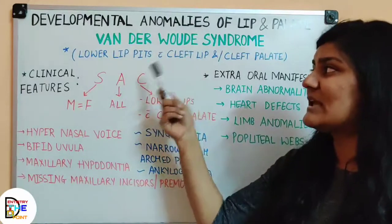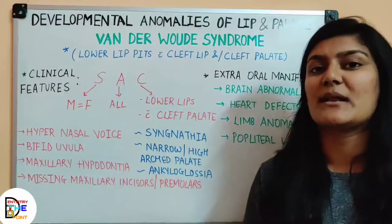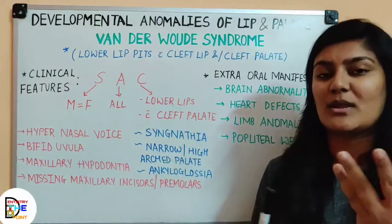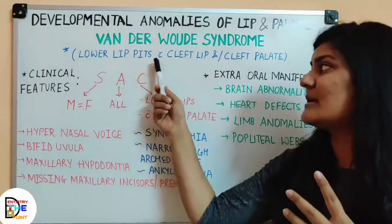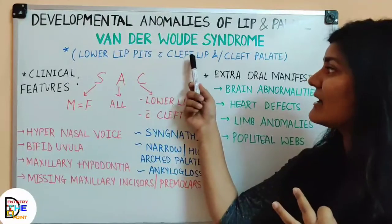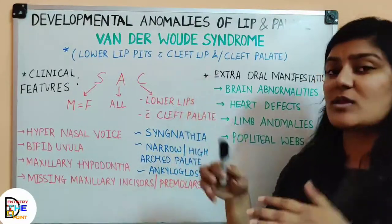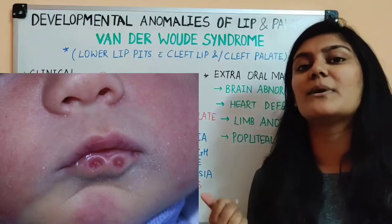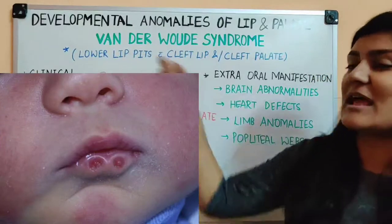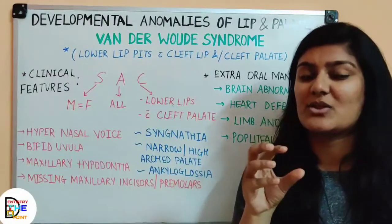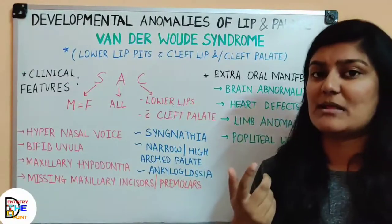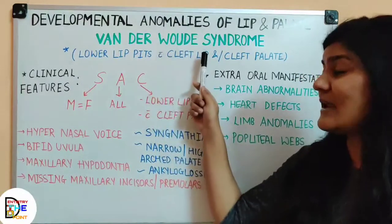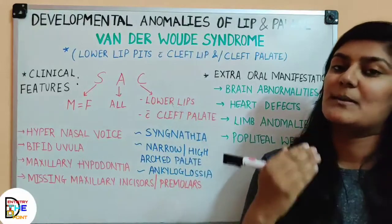Van der Woude syndrome has three other names. The first name is Lip Pits Syndrome. The second name is Cleft Lip Syndrome. The third name is Dimpled Papilla Syndrome — because the pits give a dimple or depression appearance. So the three alternate names are: Lip Pits Syndrome, Cleft Lip Syndrome, and Dimpled Papilla Syndrome.